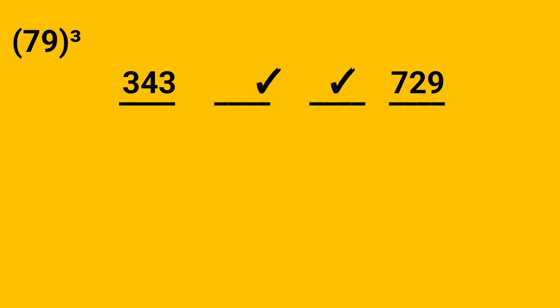Let us take another question: 79 cube. Step 1: creating 4 places like this. Step 2: write 7 cubed as 343 at 1st place, and 9 cubed as 729 at 4th place. Step 3: filling 2nd and 3rd place in the ratio 7 is to 9, which is 441 and 567. Write it at the 2 places accordingly.